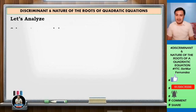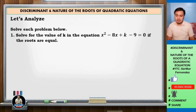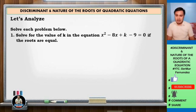Let us analyze. We have to solve each problem below. Problem number one: solve for the value of k in the equation x squared minus 8x plus k minus 9 equals 0, if the roots are equal. Let us make problem number one our guide to the other problems.